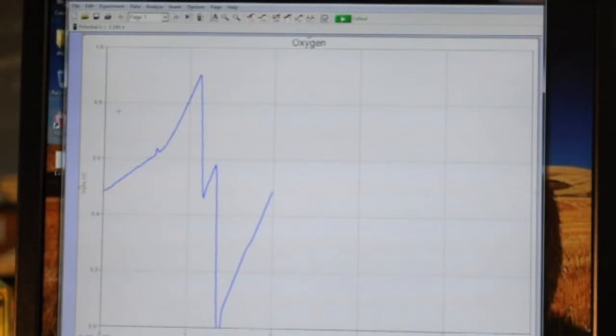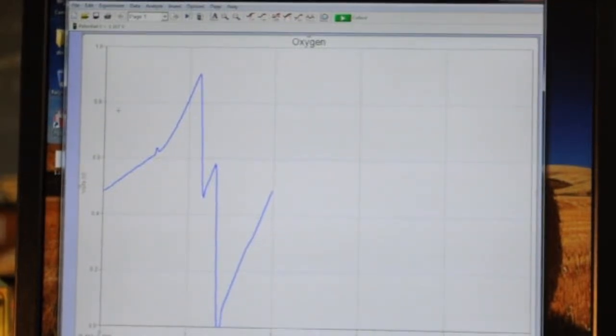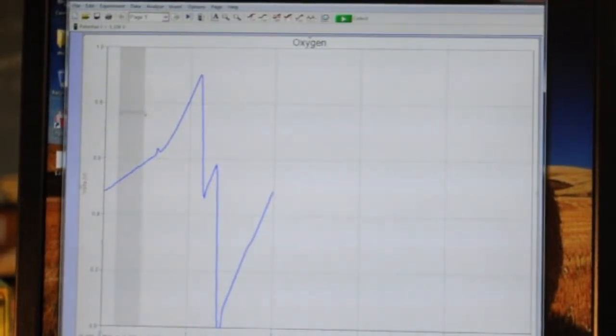When you have completed an experiment click the red Stop button at the top of the computer monitor. After stopping the data collection you can use LoggerPro to determine the various rates. Click and drag over a linear portion of the first experimental condition. Then click the Regression Analysis button and LoggerPro will calculate the slope. Repeat this for all experimental conditions. When the analysis is done print a copy of the output for each person in your group.